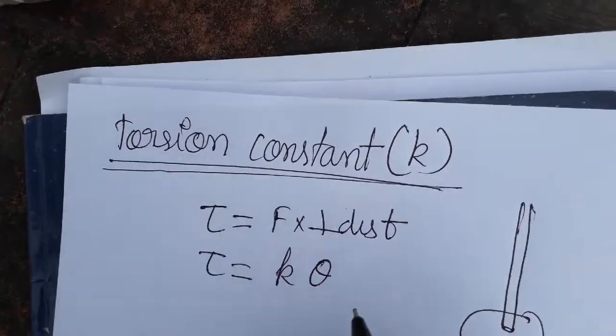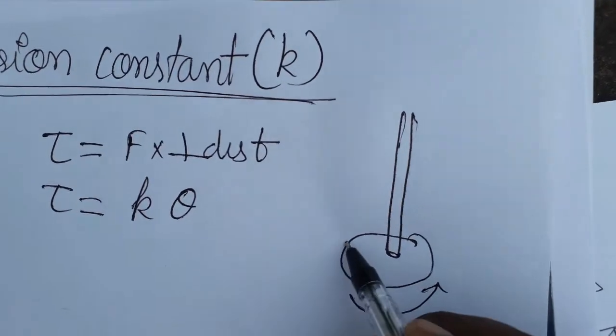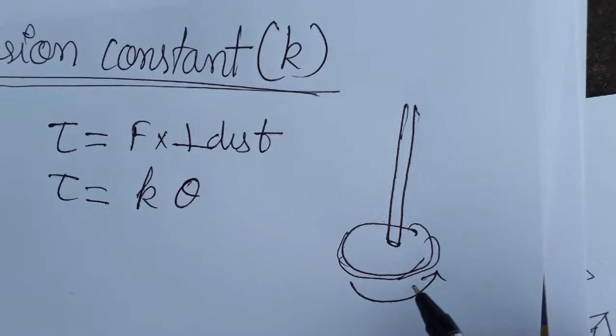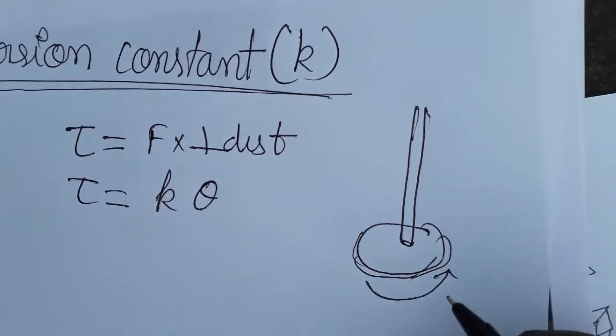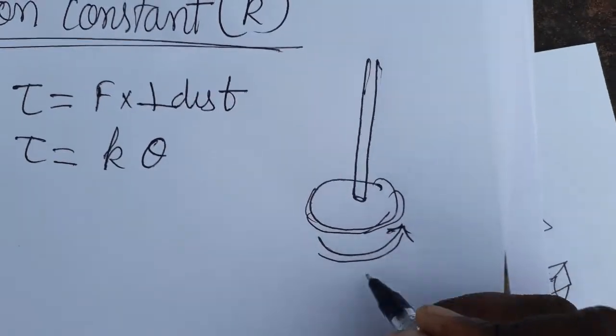Torsion constant actually comes from torque. When the disc is rotating, it is applicable in moving coil galvanometer also. When the disc is rotating,